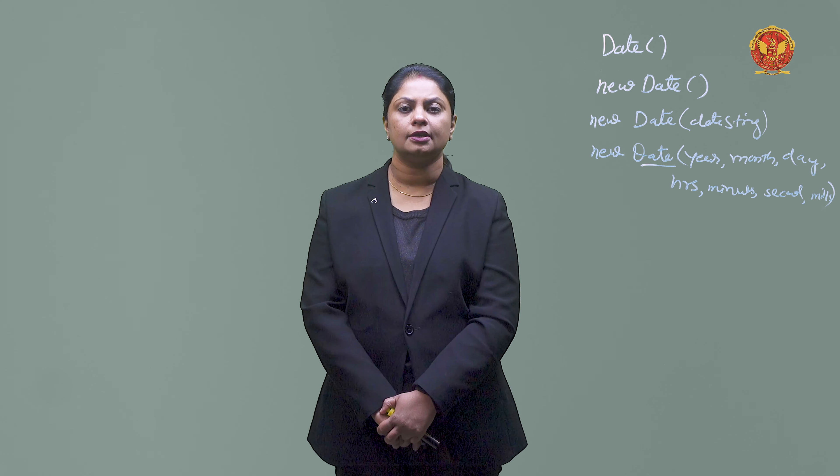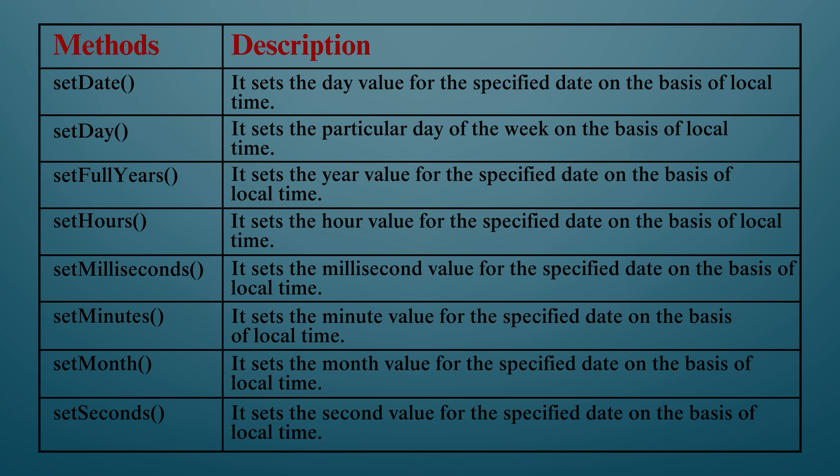Now we will see JavaScript set methods. If you want to set date values, you can use the set date methods. setDate will set the day value for the specified date based on the local time. setDay sets a particular day of the week based on local time. setFullYear will set the year value for a specified date that you are passing as a parameter, based on local time.